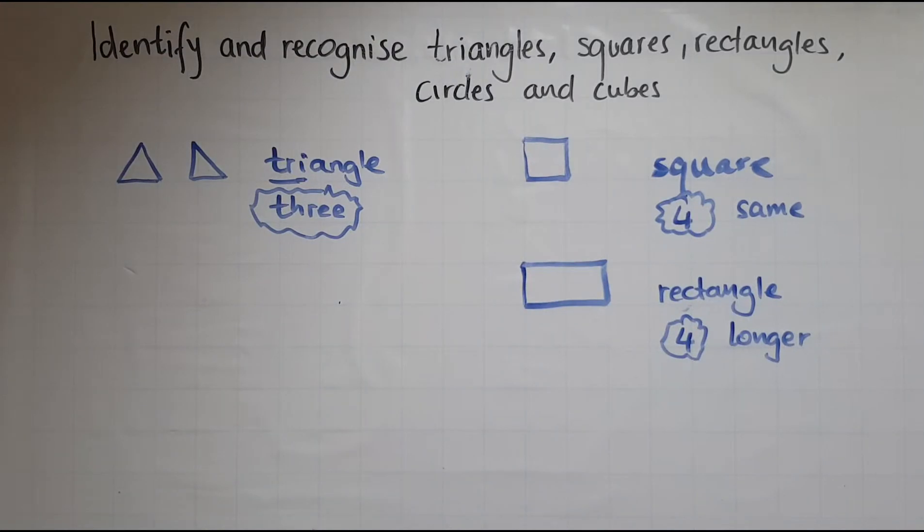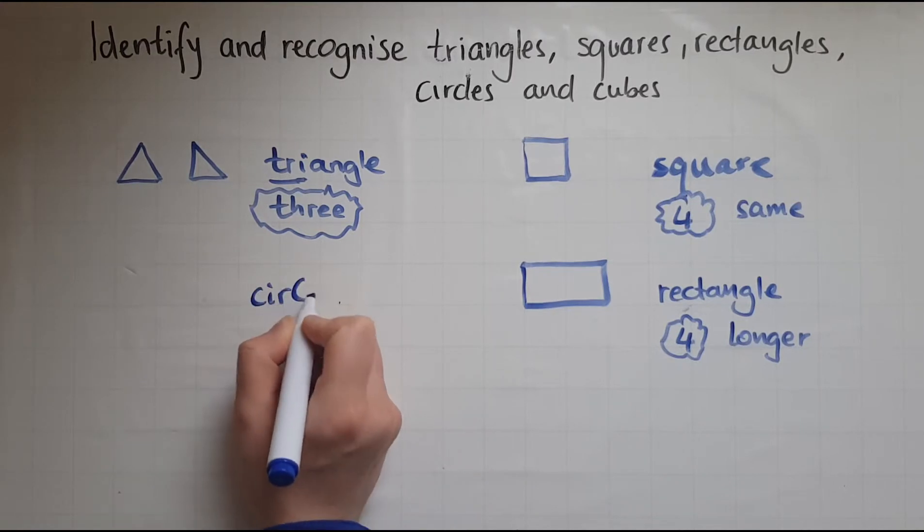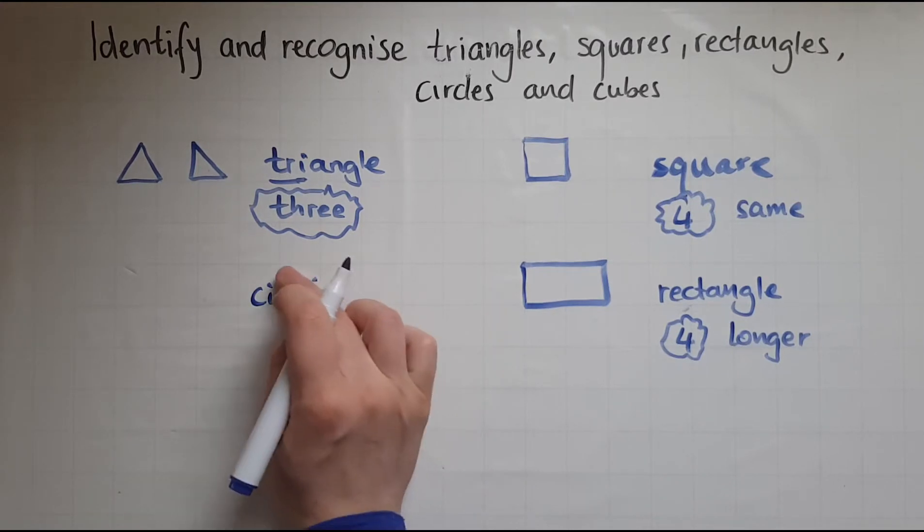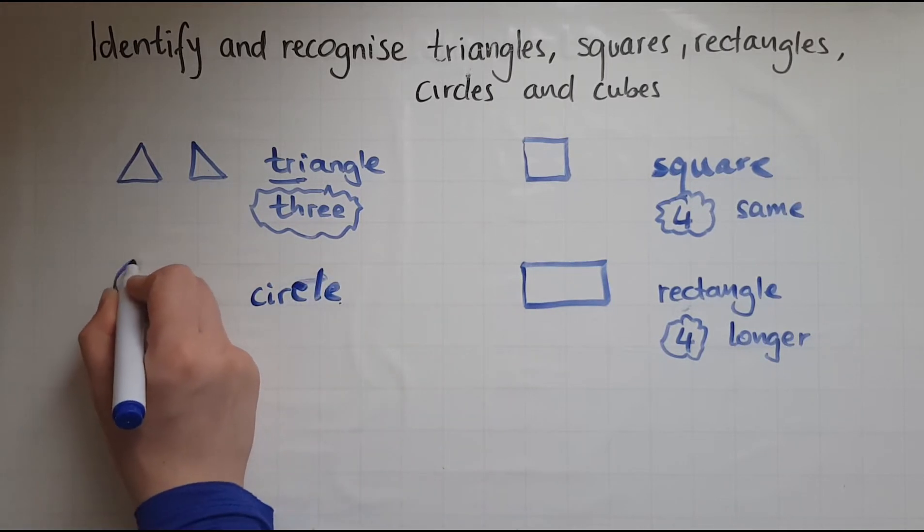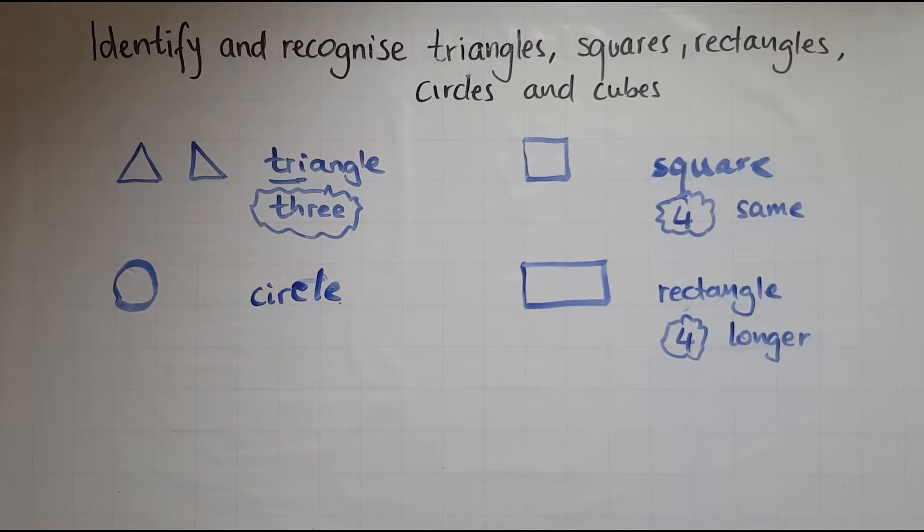So, another shape we need to look at is circle. In some questions, you're asked to circle your answer. So what you do is go around the word like this. So a circle looks like that.